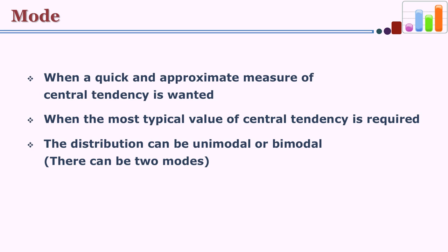The third measure of central tendency is mode. Mode tells you the peak — for example, if you see 100 women and 90 are wearing saris, the mode of the fashion is a saree. Mode is described as the highest number of people showing a particular score, that is the highest frequency. In a distribution if you have 20 times the score 45 appearing, then the mode is 45 because that is the maximum frequency of that score. This is a very crude measure, but when you need a quick and approximate measure we use mode.